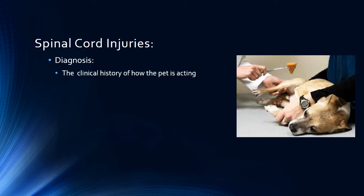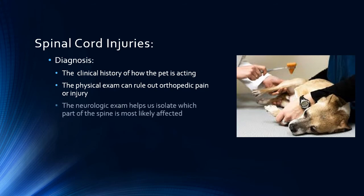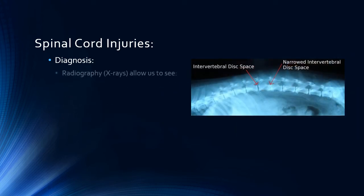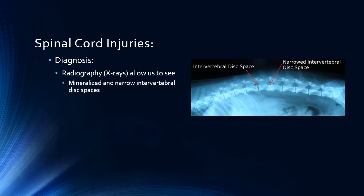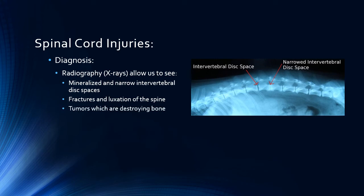Diagnosis of spinal cord injuries begins with the history from the owner. The behaviors mentioned above may give your veterinarian a clue that spinal cord injury is at the root of the symptoms. Next, a thorough physical exam will help rule out any orthopedic bone or joint injury that may be causing the symptoms. Finally, a neurologic exam is performed to help localize the injury to a specific section of the spinal cord. Once a spinal cord injury is suspected, we turn to diagnostic imaging. We generally start with radiography or x-rays because they are readily available and relatively inexpensive. Radiographs can easily tell us if there are mineralized and/or collapsed discs. When a disc ruptures, it becomes thinner than the other discs and the distance between the vertebra narrows, as seen in this radiograph. X-rays are also very useful to determine fractures, dislocations, and bone-destroying tumors.